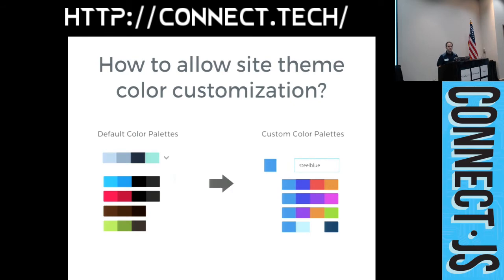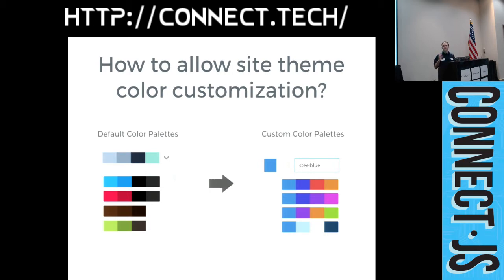One of the features we wanted to add was Custom Color Palettes. A user would select a theme and we'd provide default color palettes — selecting a palette gives them certain colors for background, link, and button colors. We wanted to allow them to customize colors, but without making it too overwhelming. We found a nice middle ground: let them select a seed color, and then we generate custom palettes based on color algorithms.